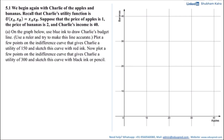On the graph, the x-axis has apples and the y-axis has bananas. Here xa represents the units of apples consumed by Charlie, which is on the x-axis, and xb represents the units of bananas consumed by Charlie, which is on the y-axis. We are first asked to use blue ink to draw Charlie's budget line. Let p of a denote the price of apples, which is equal to 1, and p of b denote the price of bananas, which is equal to 2. Let m denote Charlie's income, which is equal to 40.